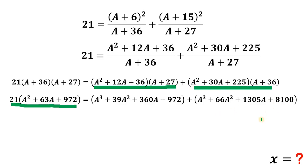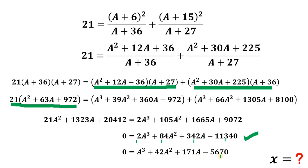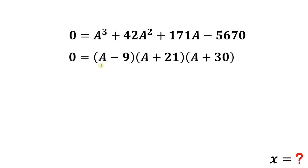Simplifying and combining like terms gives 0 equals 2a cubed plus 84a squared plus 342a minus 11,340. Dividing all terms by 2 yields 0 equals a cubed plus 42a squared plus 171a minus 5,670. Using synthetic division to factor this cubic equation, we arrive at (a minus 9)(a plus 21)(a plus 30) equals zero.